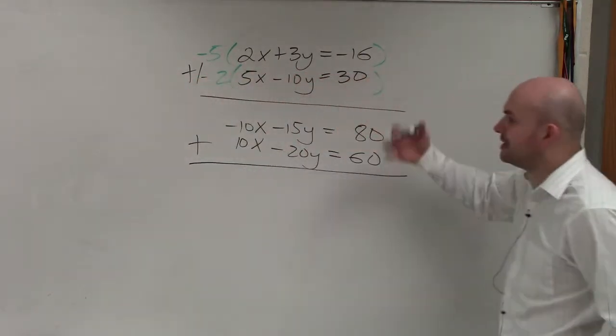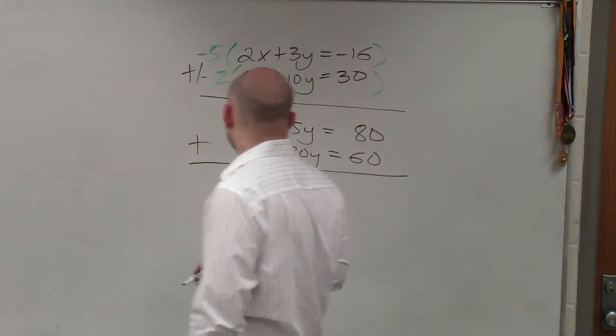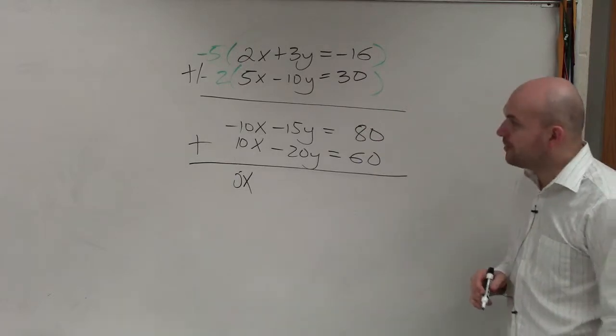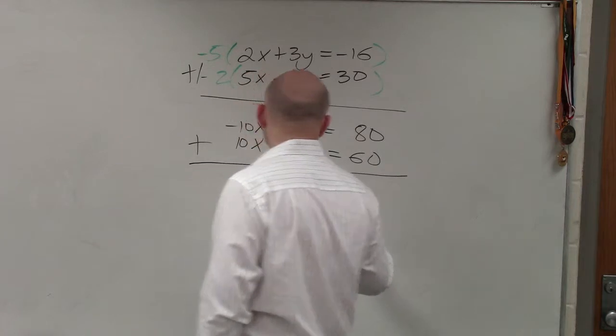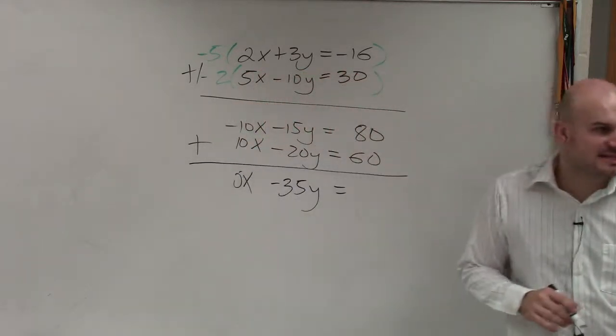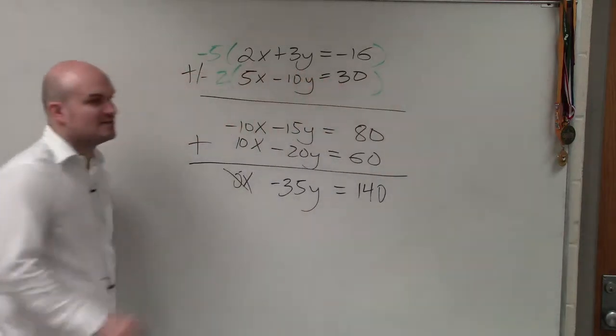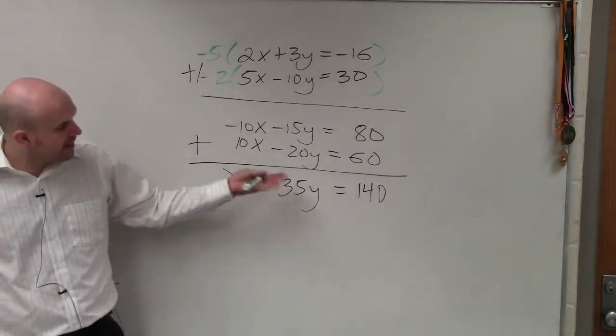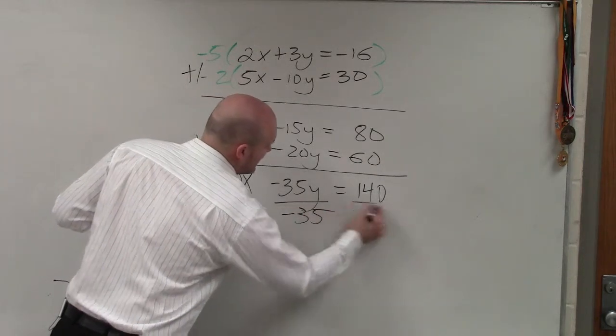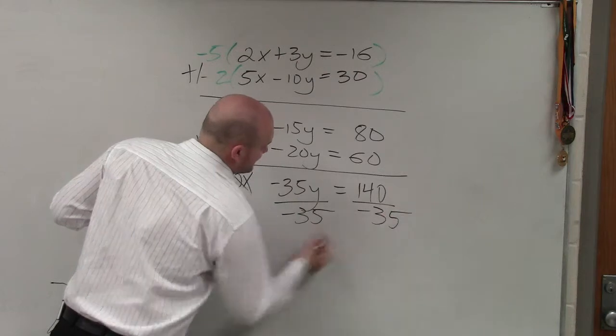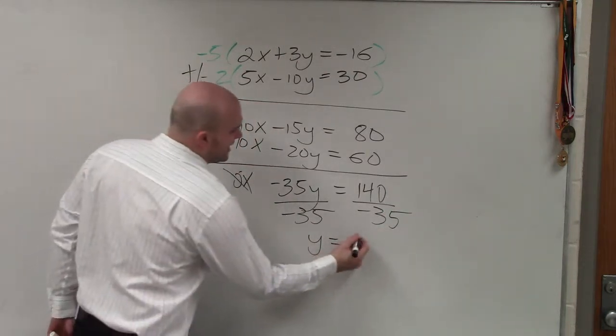So now, let's go ahead and add our equations. Negative 10x plus 10x is 0x. Negative 15y plus a negative 20y is going to be negative 35y. And 80 plus 60 is going to be 140. Obviously, 0 times anything is just going to be 0. Now, I have negative 35y equals 140. So I divide by negative 35. Divide by negative 35. y is going to equal negative 4.